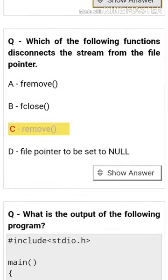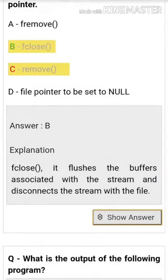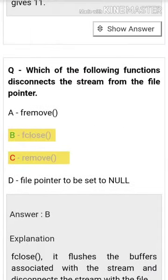Which of the following functions disconnects the stream from the file pointer? Fclose. It flushes the buffers associated with the stream and disconnects the stream from the file.